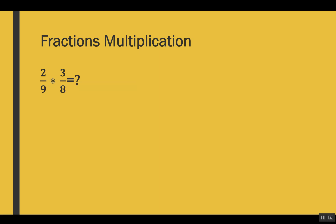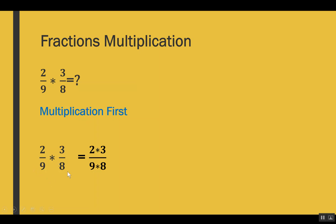Let's start with way number 1, which is multiplication first. In this method we take the numerators from the given fractions and multiply them, and we take the denominators and multiply them. So our new numerator becomes 2 × 3 and our new denominator becomes 9 × 8. If we multiply them we get 6 out of 72.